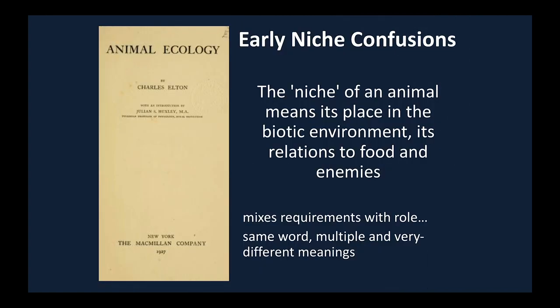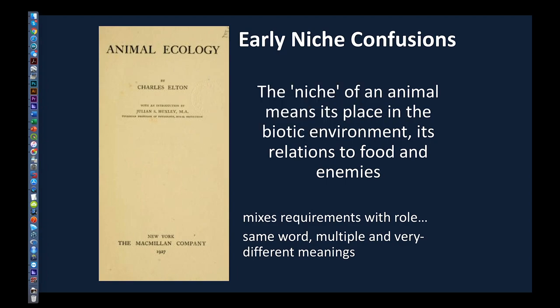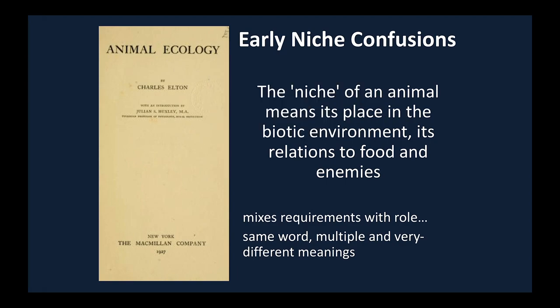Things got really messy really quickly because just 10 to 13 years after Grinnell's publications, Sir Charles Elton came along and recycled this word 'niche' to mean the place of a species in the biotic environment — its relationship to food and enemies. This mixes the idea of requirements of the species with the role of the species in a community. So it's the same word given multiple and very different meanings, which is probably a bad idea.